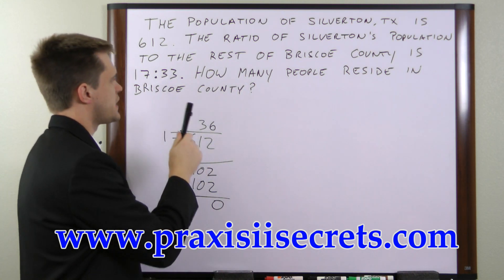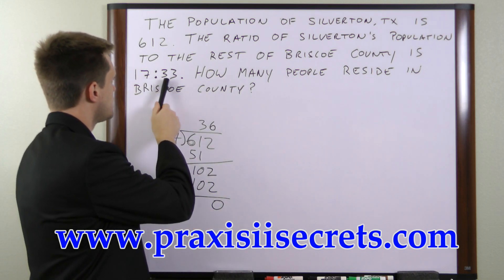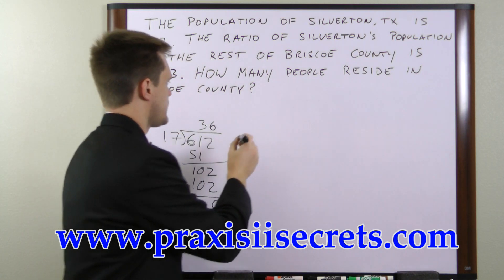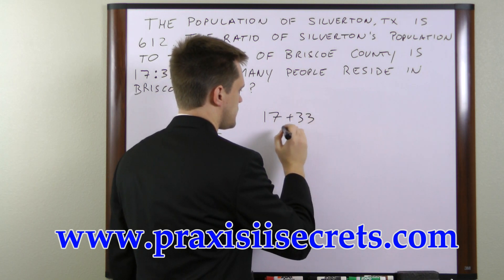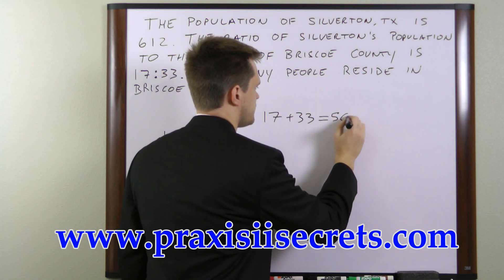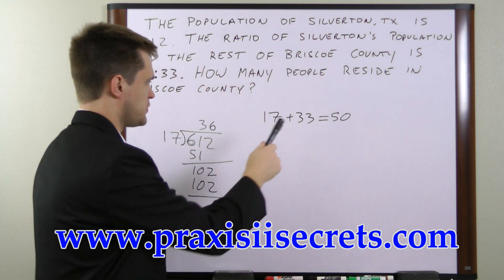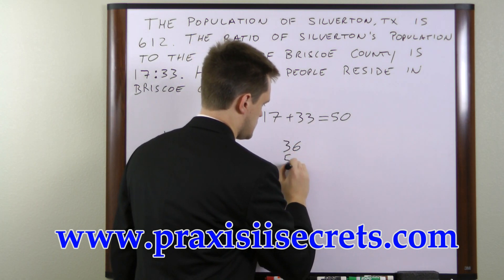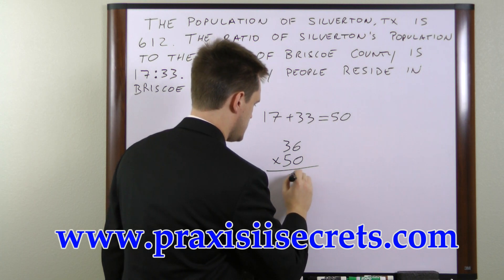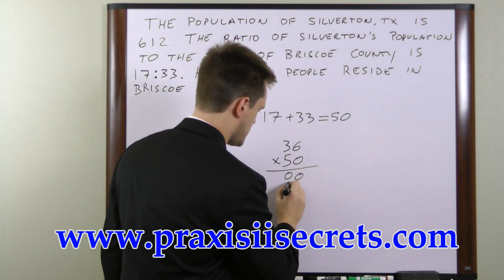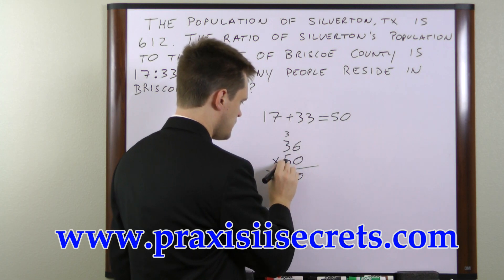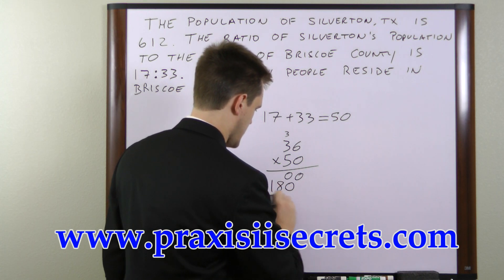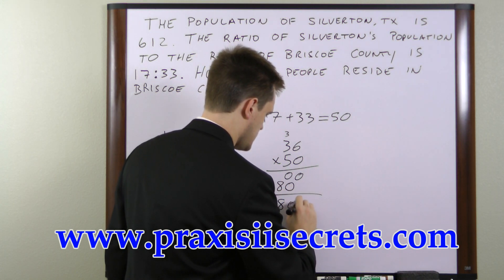So now to figure out how many people live in the county, we're going to add these two ratio numbers together and then multiply that number by 36. So we have 17 plus 33, and this is equal to 50. So now we have to multiply 50 by 36. 5 times 6 is 30, so we have a 0, carry a 3. 5 times 3 is 15 plus 3 is 18. So we have 1,800 people.